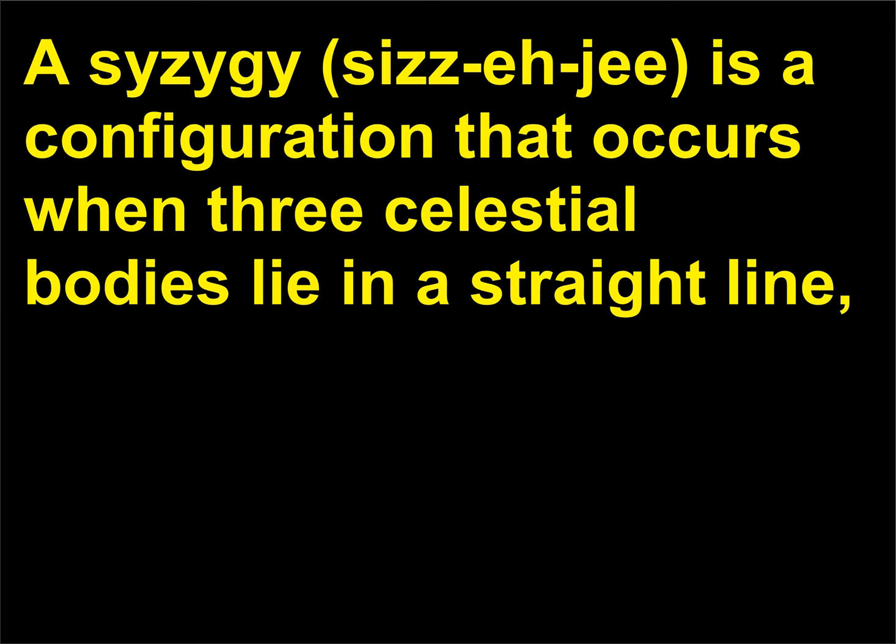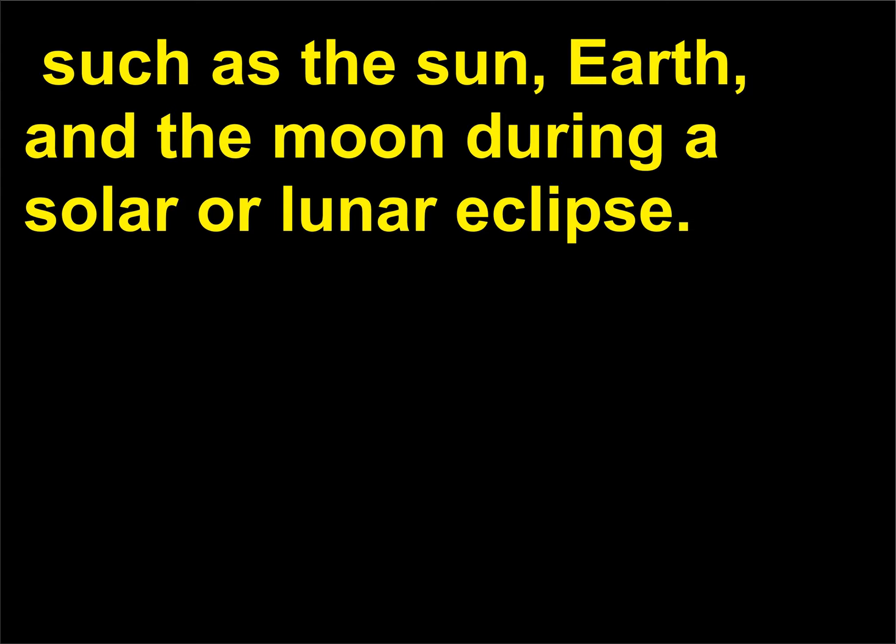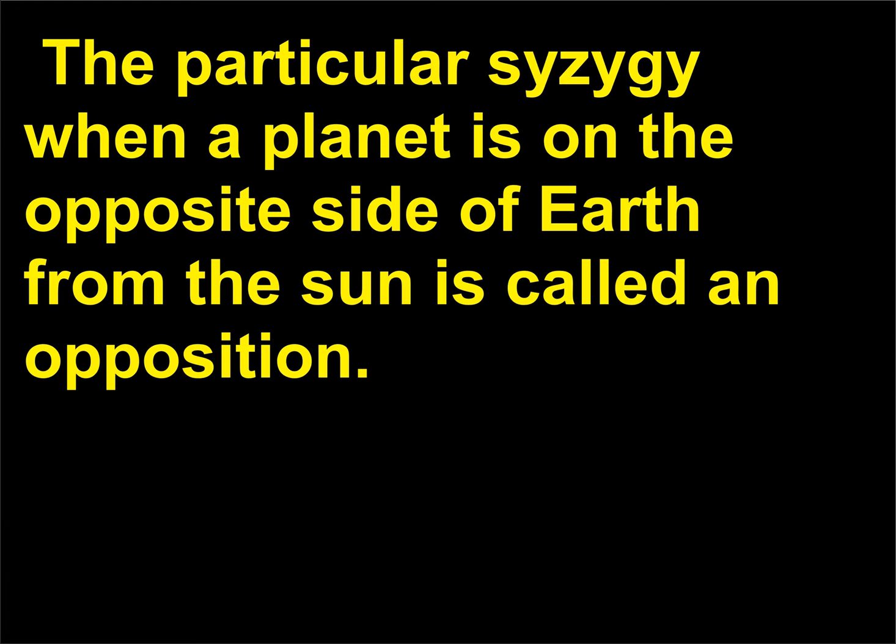What is a syzygy? A syzygy is a configuration that occurs when three celestial bodies lie in a straight line, such as the sun, Earth, and the moon during a solar or lunar eclipse. The particular syzygy when a planet is on the opposite side of Earth from the sun is called opposition.